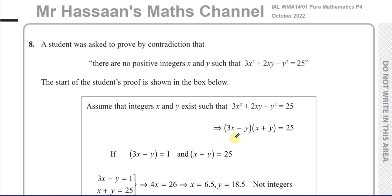Welcome back to Mr. Hassan's Maths Channel. This is question number 8 from the October 2022 International A-Level Edexcel Pure Mathematics P4 paper. This question is about proofs. It says a student was asked to prove by contradiction the statement that there are no positive integers x and y such that 3x² + 2xy − y² = 25.